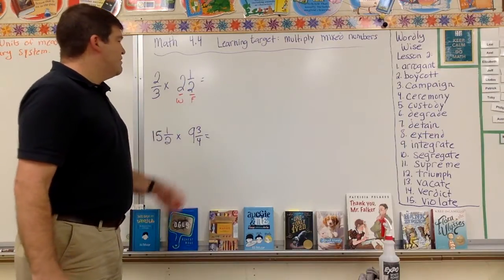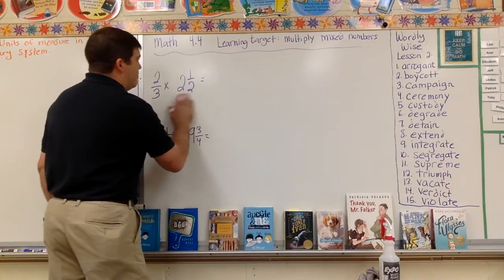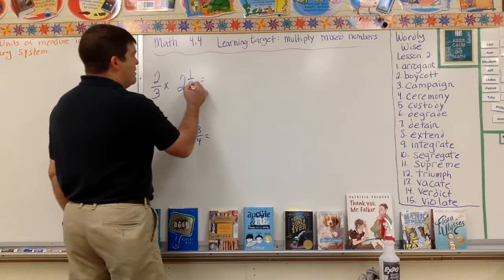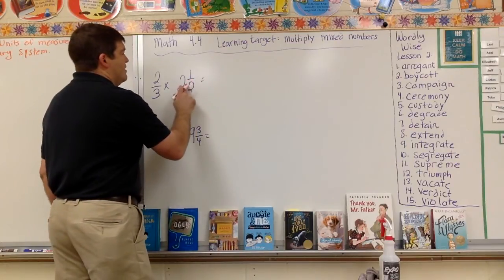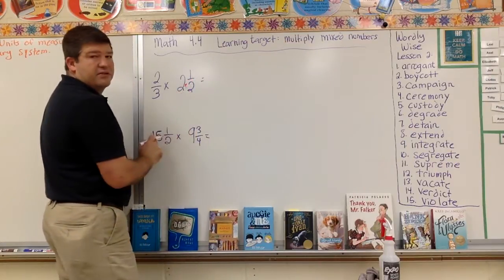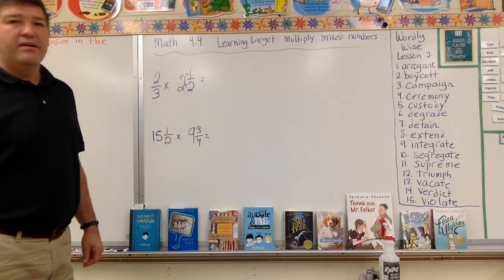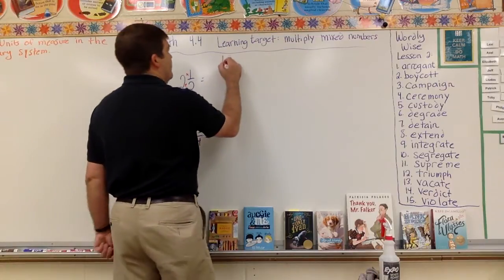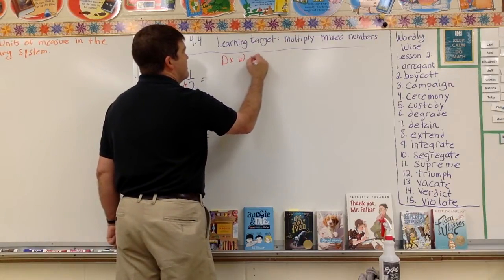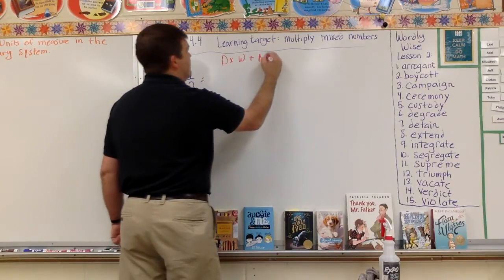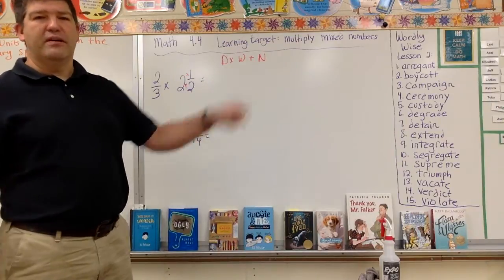Now I want to get this into just a fraction. It's going to be an improper fraction. The way you do that is you do those times each other plus whatever you have on top. Denominator times the whole number plus the numerator.